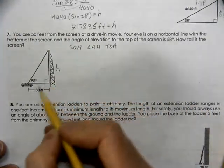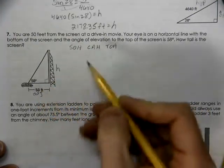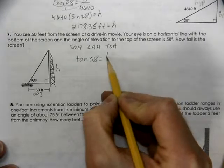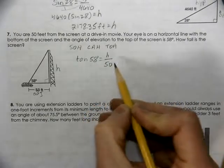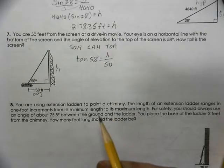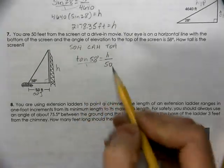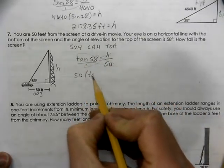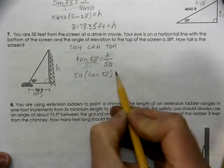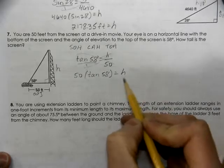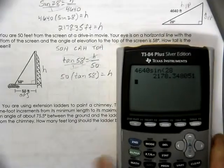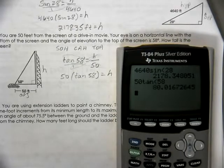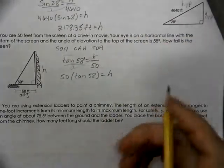So, opposite and adjacent. Adjacent means next to. So, the tangent of 58 equals the opposite side to the adjacent side. We can turn this into a proportion by putting it over 1. Cross multiply to get 50 times tangent of 58. H times 1 is just H. Use our calculator. 50 times the tangent of 58. We get 80.02.